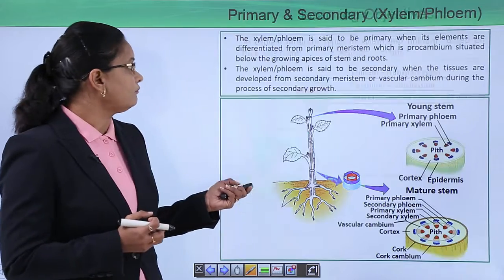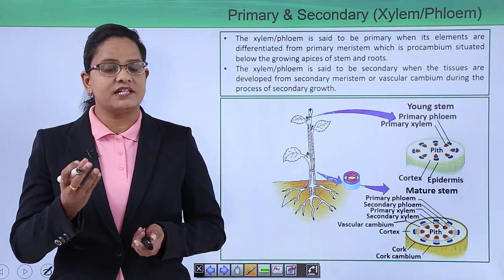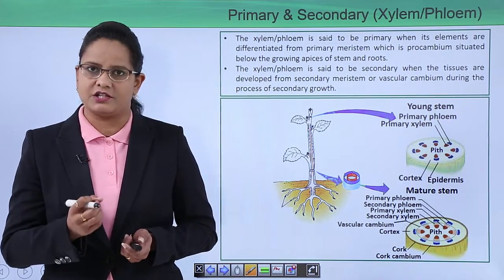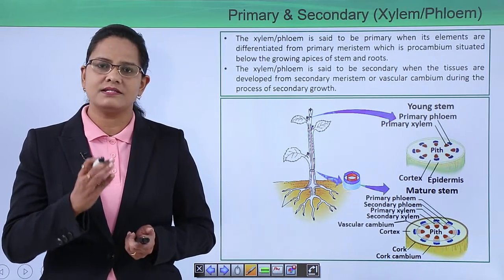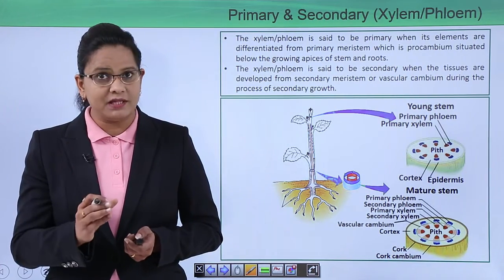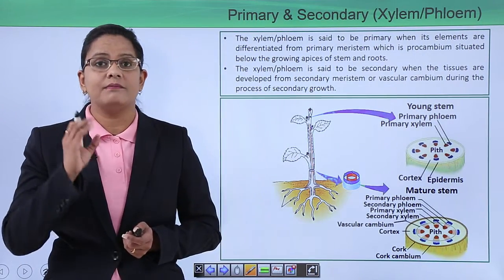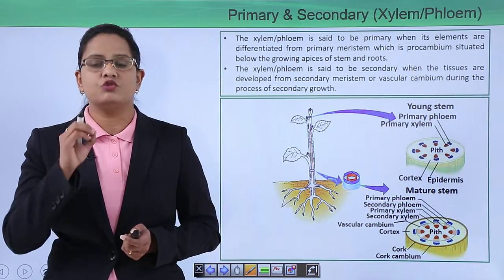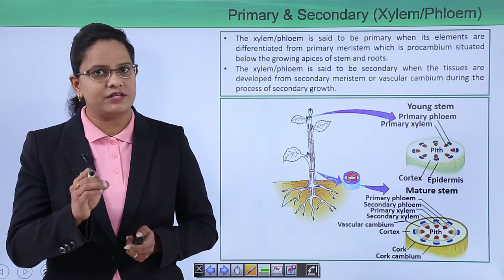The first types are primary and secondary xylem. All tissues originate from meristematic tissues. The primary meristem and secondary meristem are the two types. The xylem which originates from the primary meristem is known as primary xylem. The name of the primary meristem was pro cambium, so both xylem and phloem tissues originating from pro cambium are known as primary xylem or primary phloem.